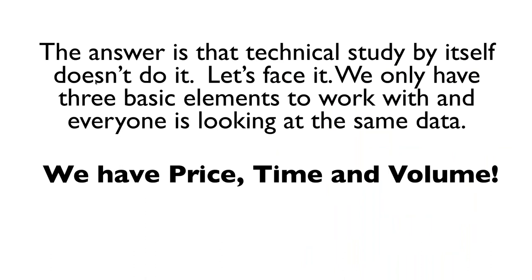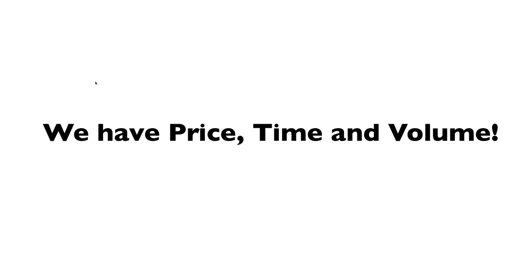We only have three basic elements: price, time, and volume. Quick quiz — of those three, which two do most people concentrate on? The answer: price and time. If most people concentrate on price and time, that's going to appear in more and more indicators. The trouble with indicators is they now appear for free on every trading platform. When I started trading over 20 years ago, you had to pay upwards of $300 a month to a company like RealTick to get the same indicators.